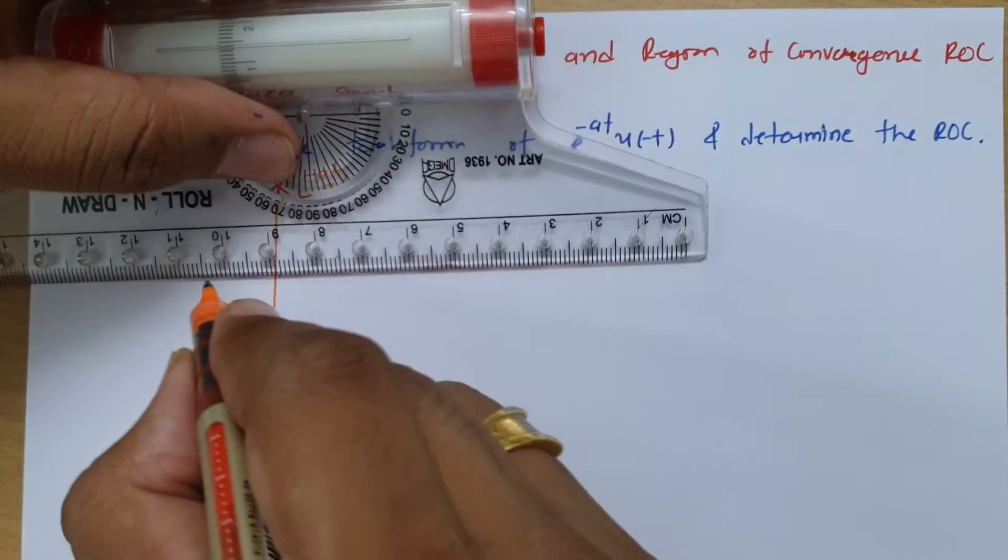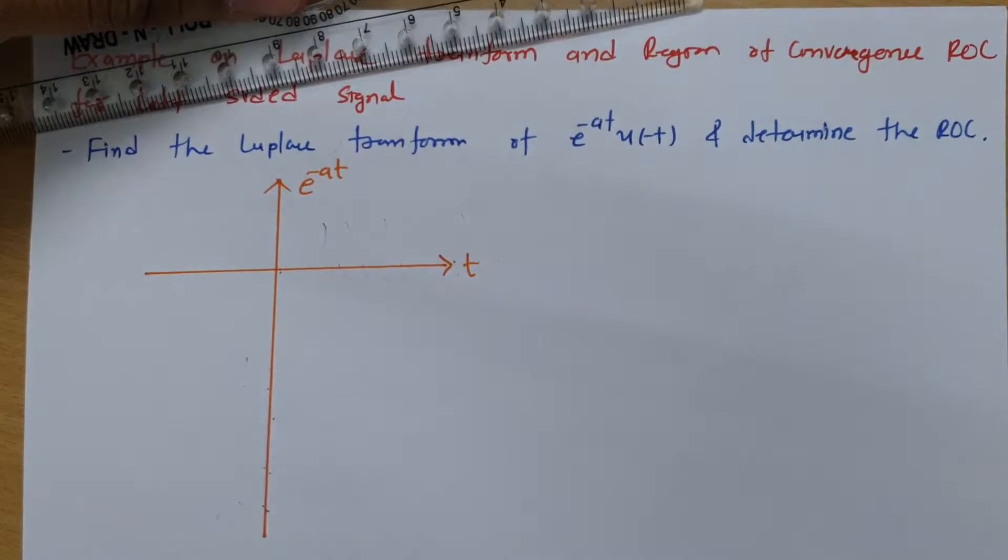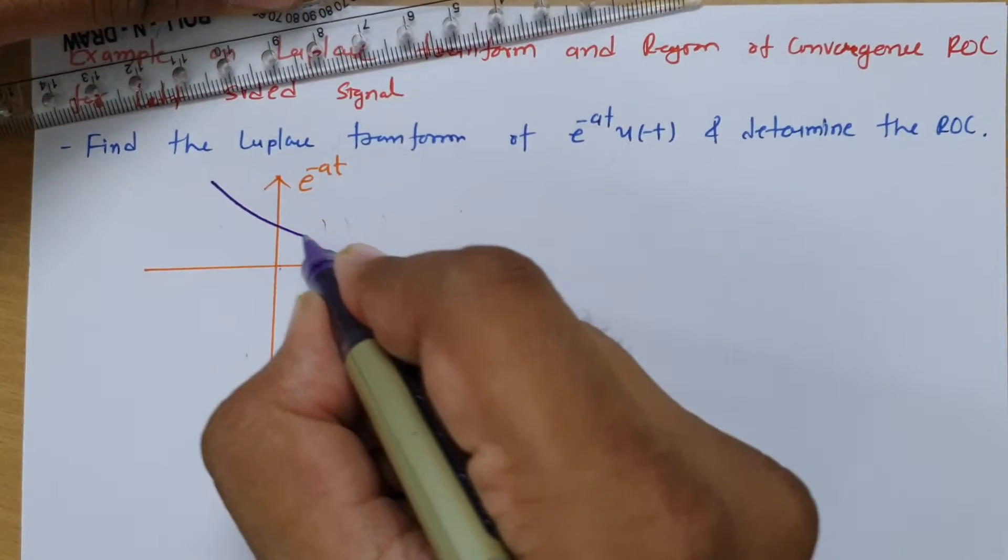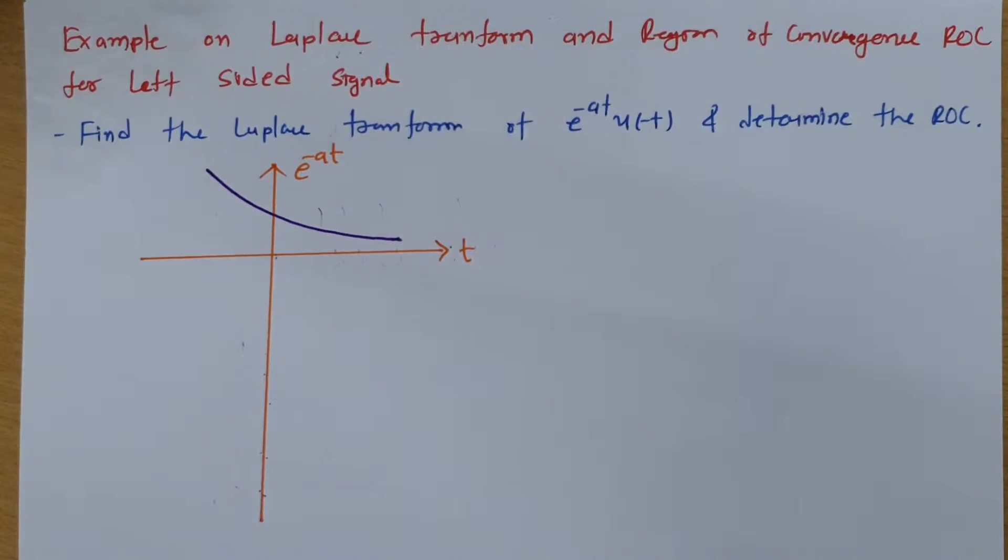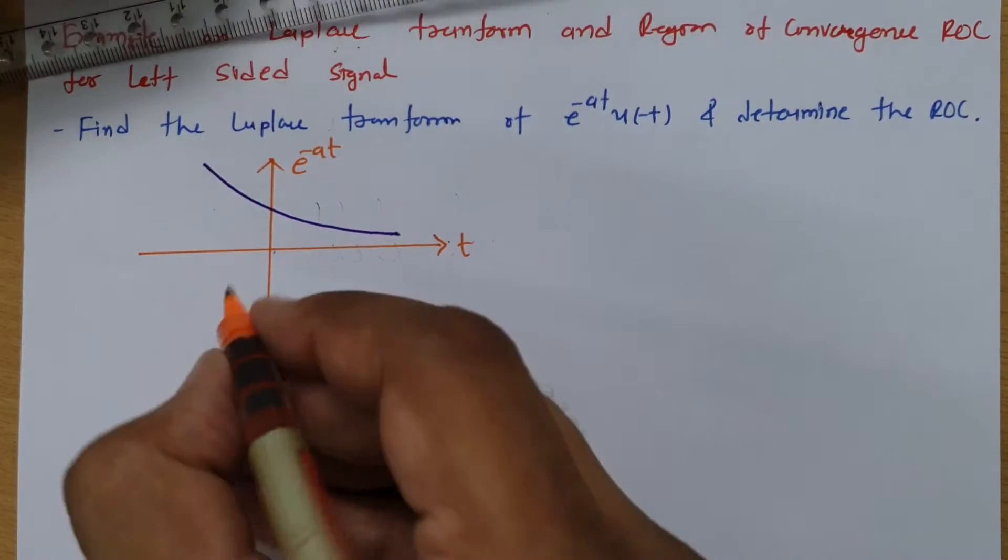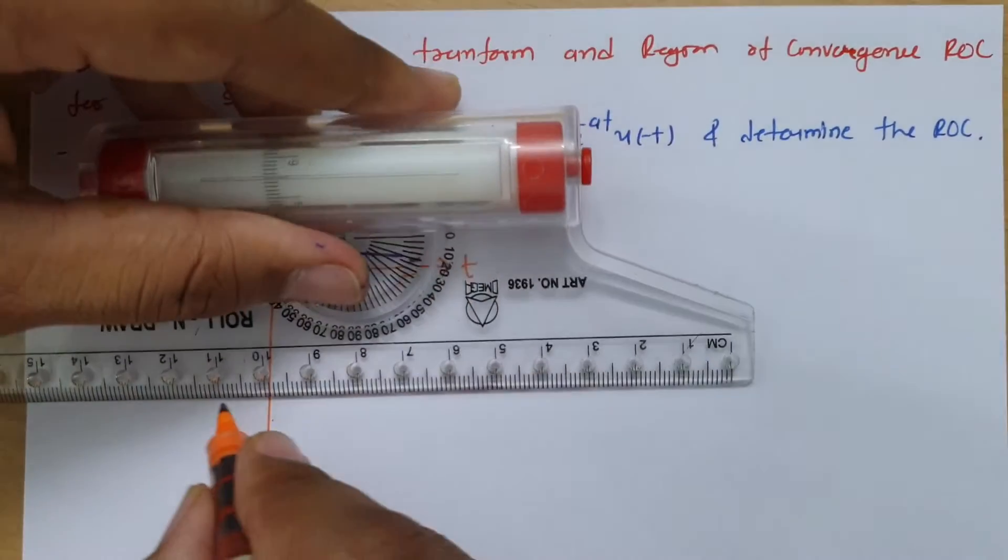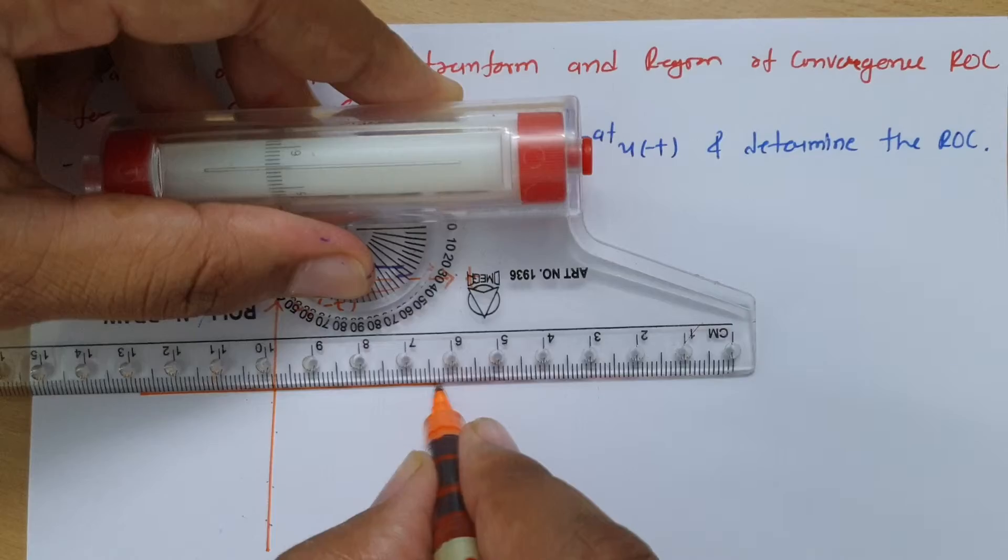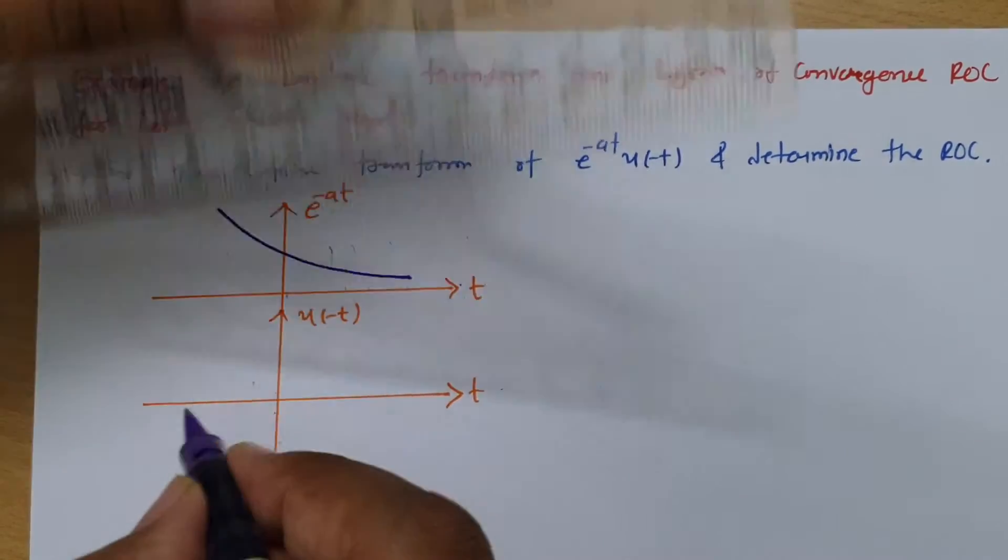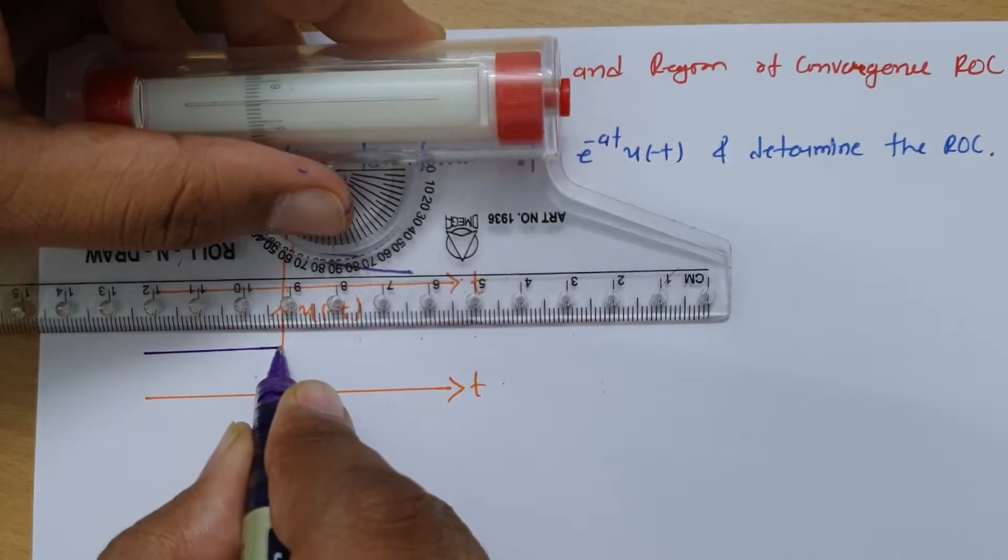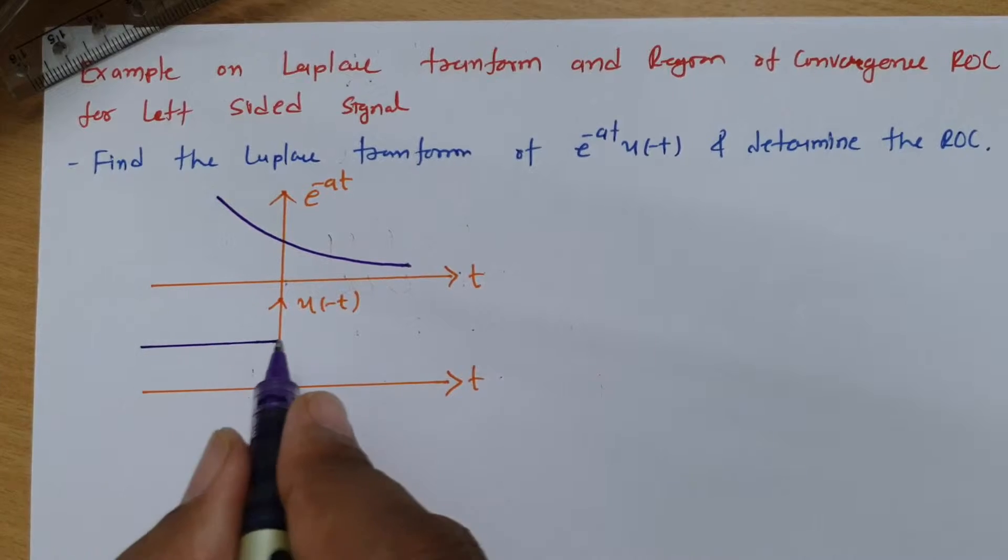If I say e to the power minus at, then one can clearly understand this signal is exponentially decaying with respect to increase in time. And if you see u of minus t signal, technically we can plot it like this, it is actually happening in this direction.